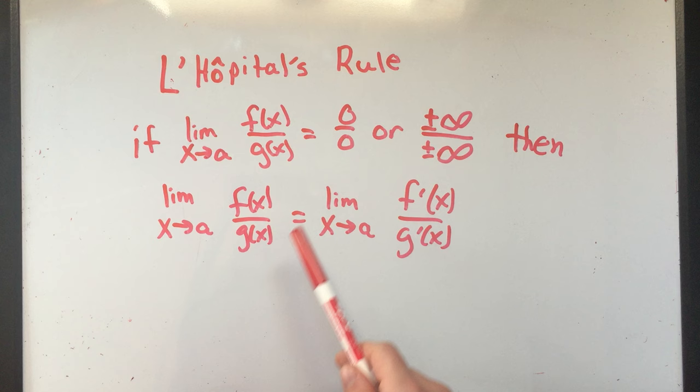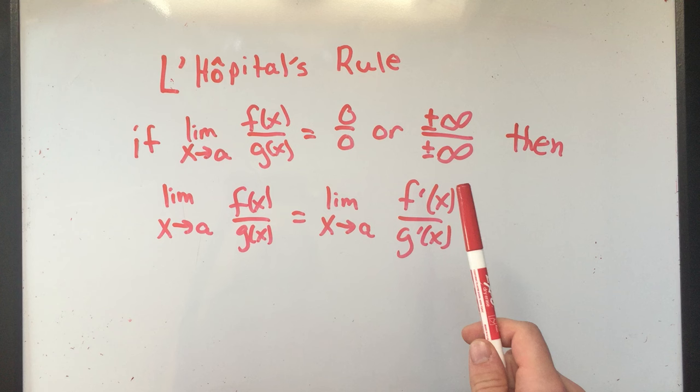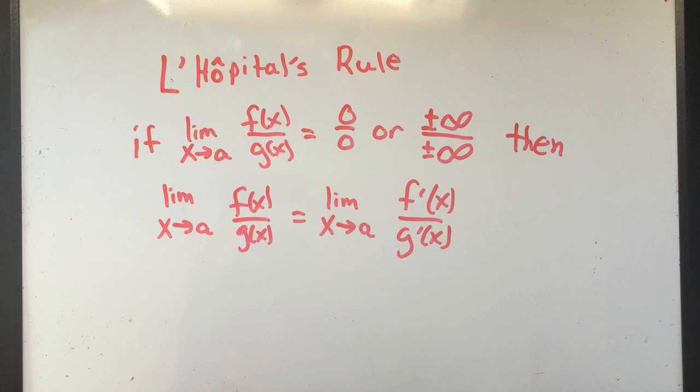It says if either of these things happen, then the original limit problem is the same as the limit of the derivative of the top function over the derivative of the bottom function. So basically, if you get 0 over 0 or infinity over infinity, you can take the derivative of the top, separately take the derivative of the bottom,